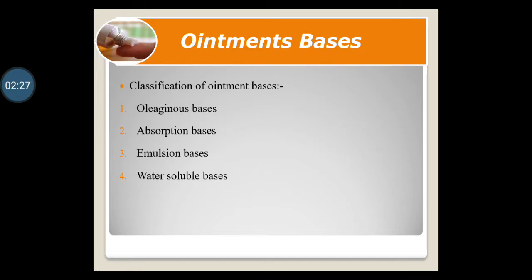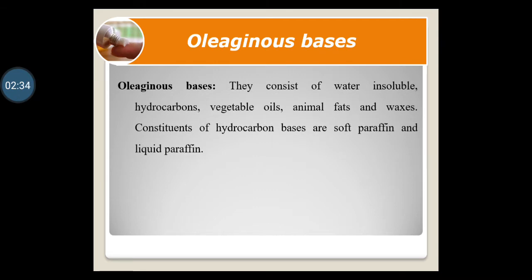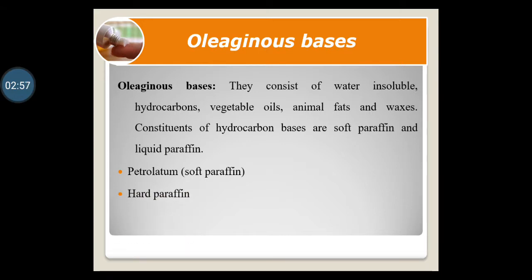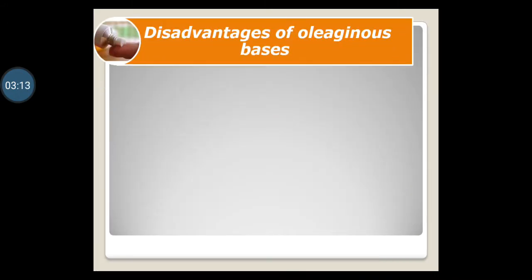Let us see what oleaginous bases are. They consist of water-insoluble hydrocarbons, vegetable oils, animal fats and waxes. Constituents of hydrocarbon bases are soft paraffin and liquid paraffin. The examples of oleaginous bases are petrolatum, soft paraffin, hard paraffin and liquid paraffin. Let us discuss each of these one by one.